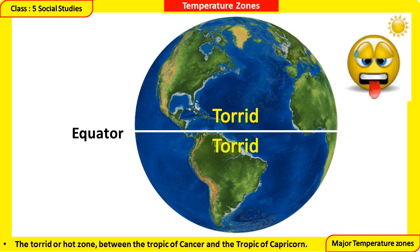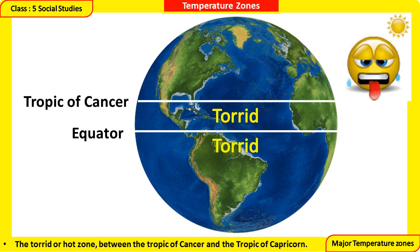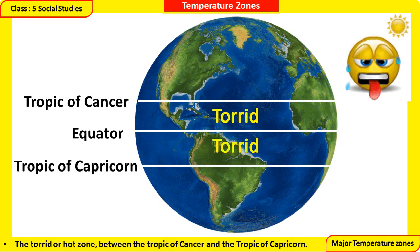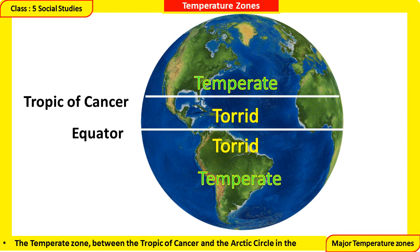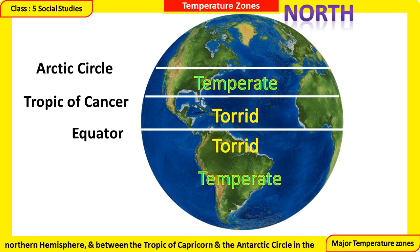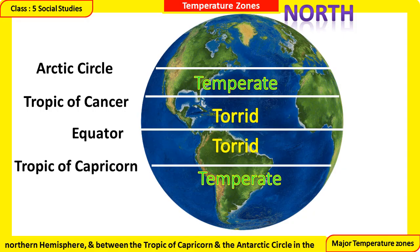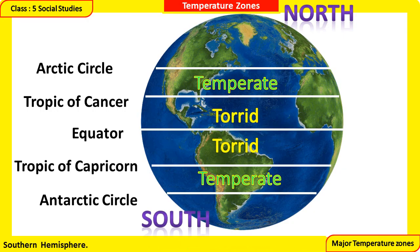The Torrid Zone lies between the Tropic of Cancer and the Tropic of Capricorn. The Temperate Zone — temperate means neither too hot nor too cold — lies between the Tropic of Cancer and the Arctic Circle in the northern hemisphere, and between the Tropic of Capricorn and the Antarctic Circle in the southern hemisphere.